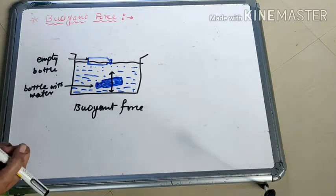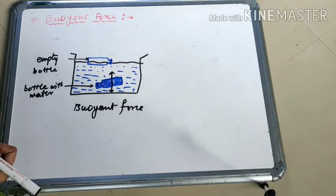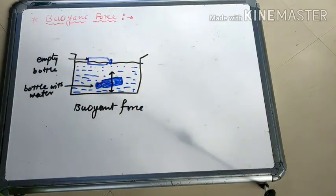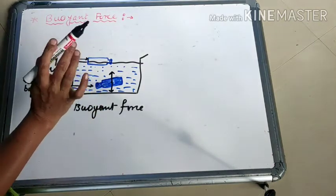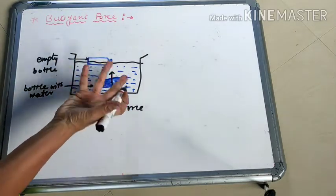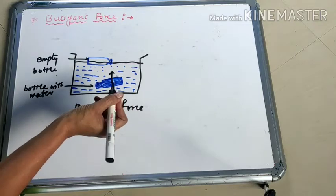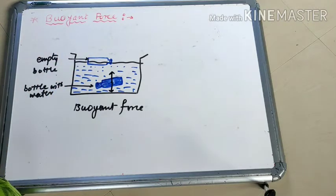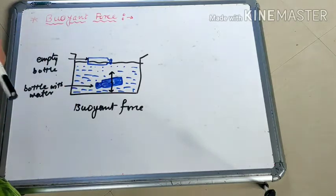How do we experience Buoyant force? For this there is one activity. Take one empty plastic bottle, fix the lid tightly, and leave it in water. What happened? It will float on the water surface. Then push this empty bottle inside the water. What happened? Does the bottle sink? No. The bottle again floats on the water — it cannot sink, it continues to float.